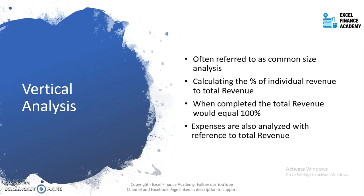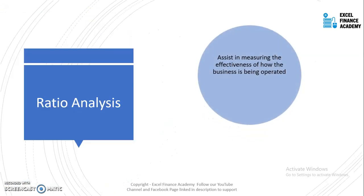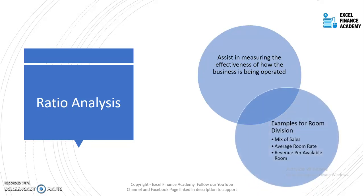We will look at this in more detail when examining an example in the next video. Expenses are also analyzed with reference to total revenue, but that is called ratio analysis rather than vertical analysis. Ratio analysis assists in measuring the effectiveness of how the business is being operated by the property. It compares operational matrices and financial matrices together. Examples include sales mix, average room rate, and revenue per available room.